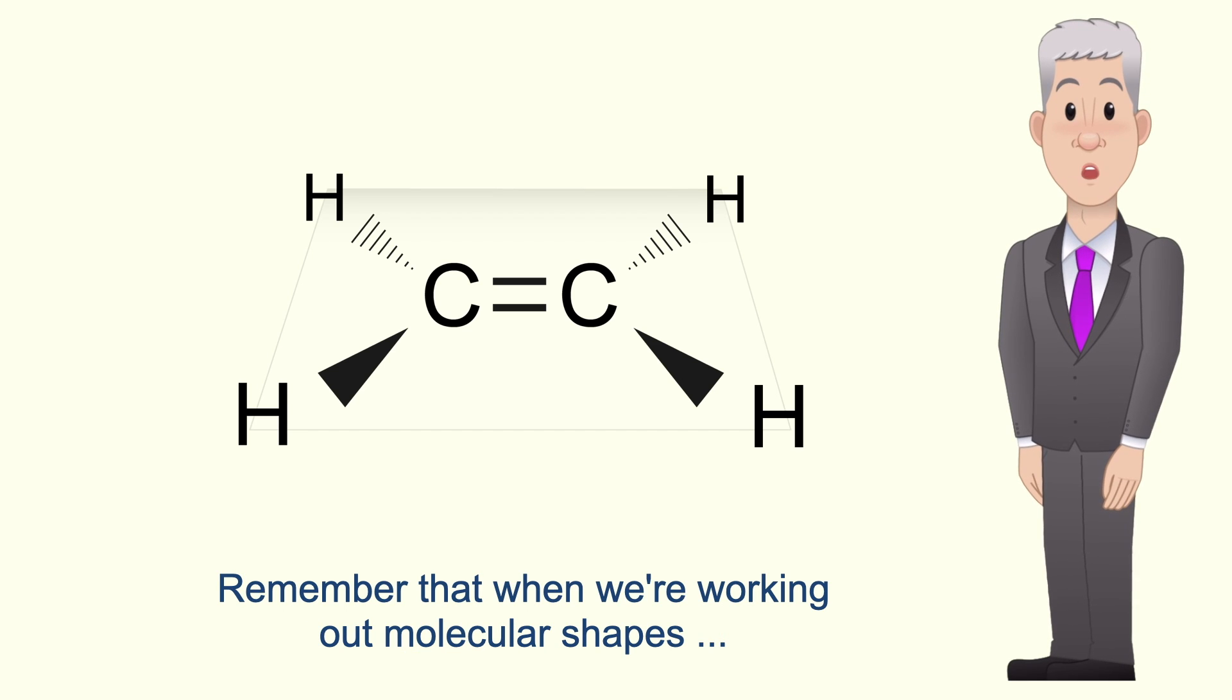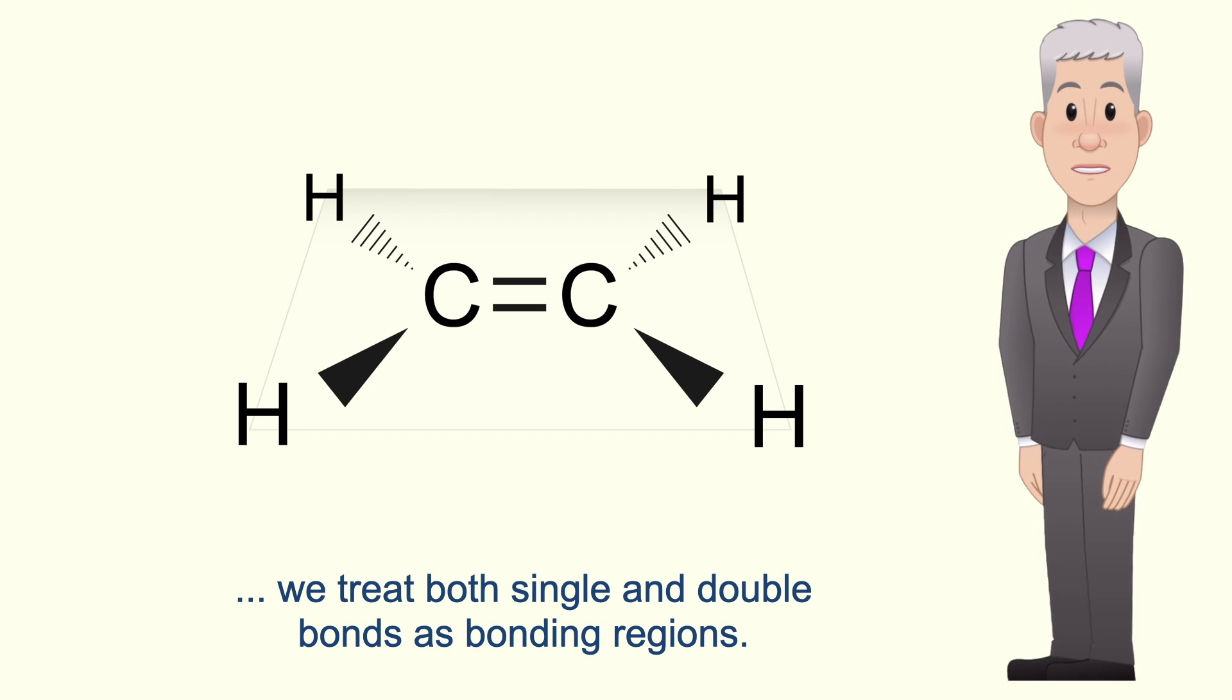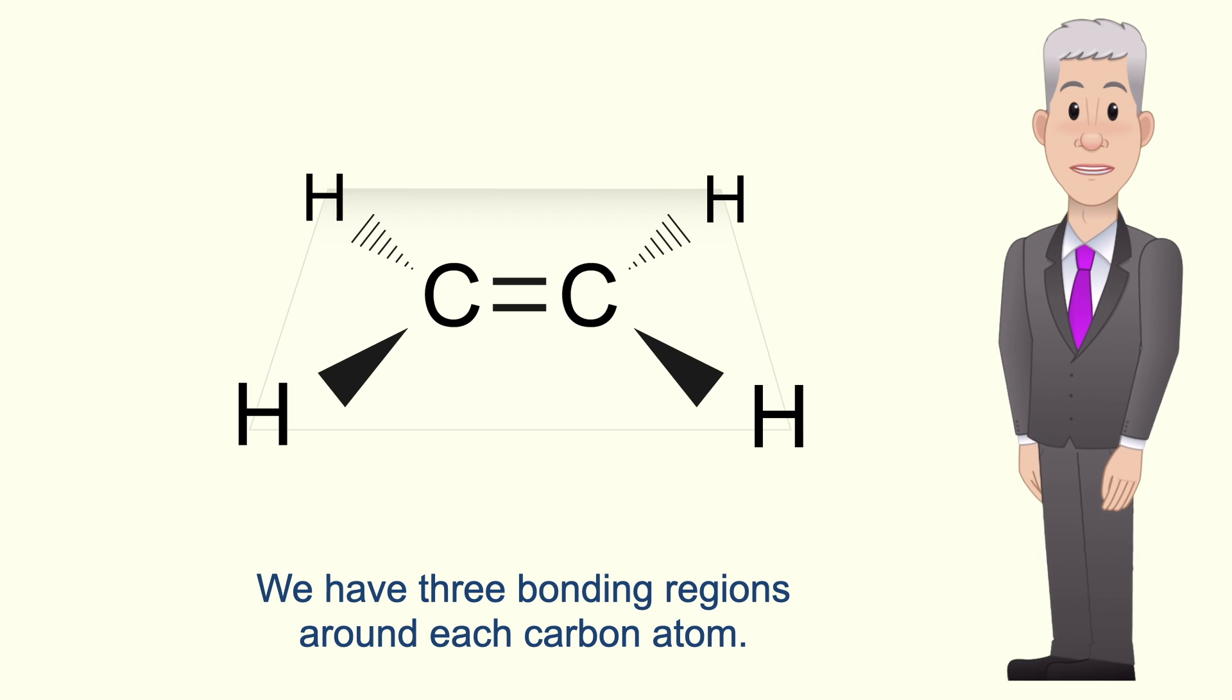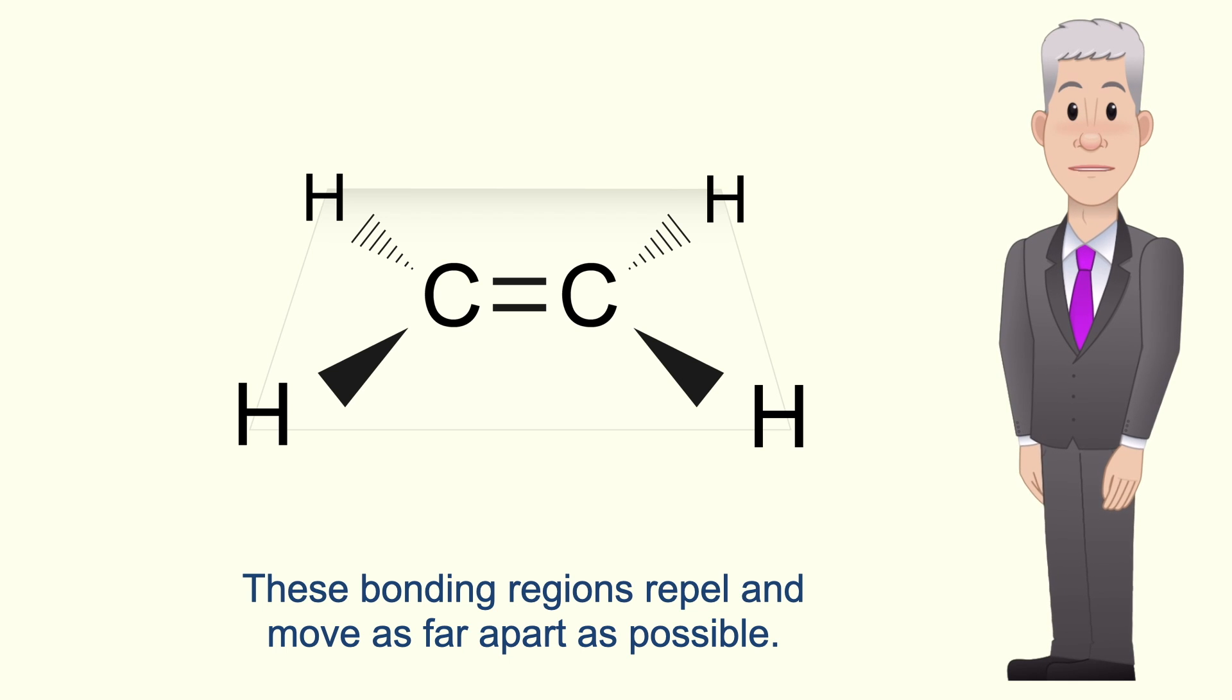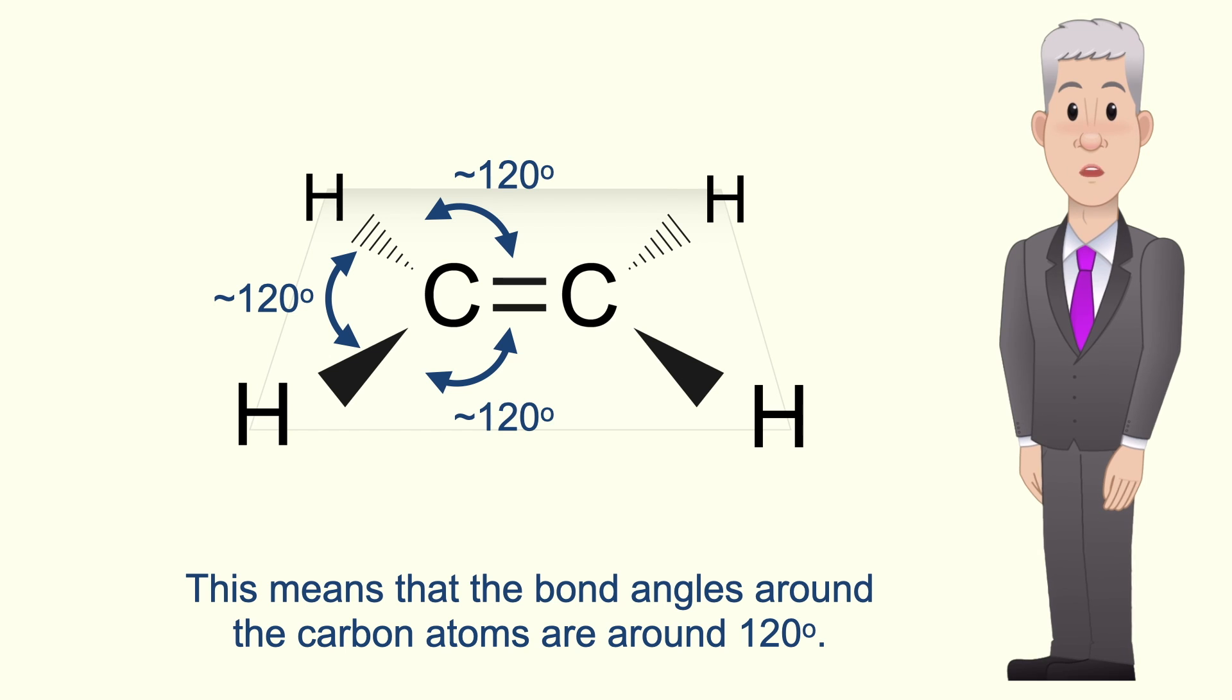Remember that when we're working out molecular shapes we treat both single and double bonds as bonding regions. We've got three bonding regions around each carbon atom. These bonding regions repel and move as far apart as possible. So this means that the bond angles around the carbon atoms are around 120 degrees.